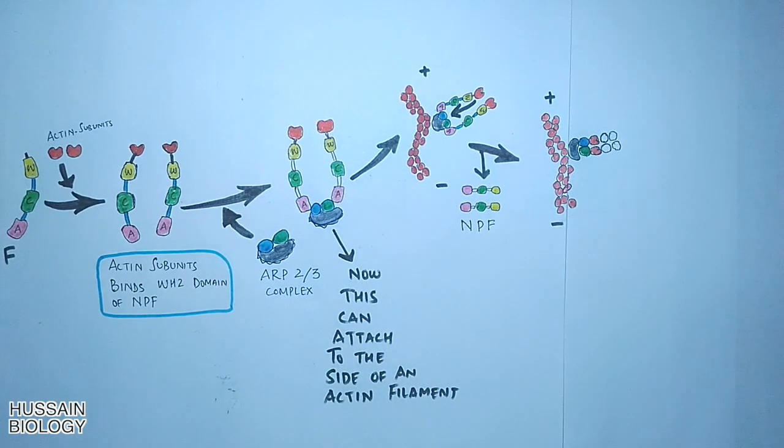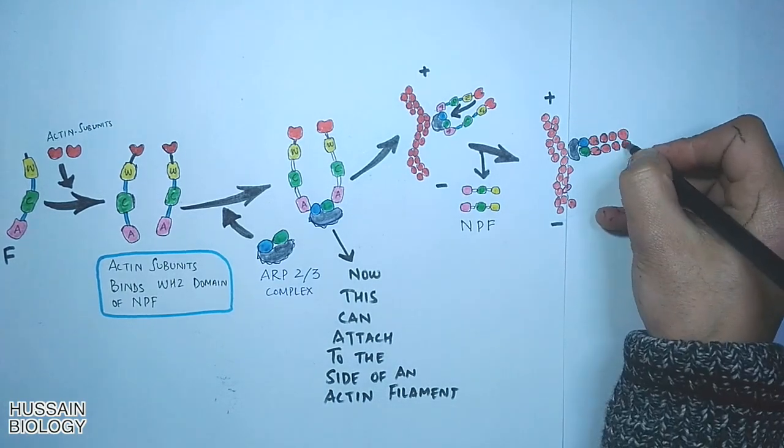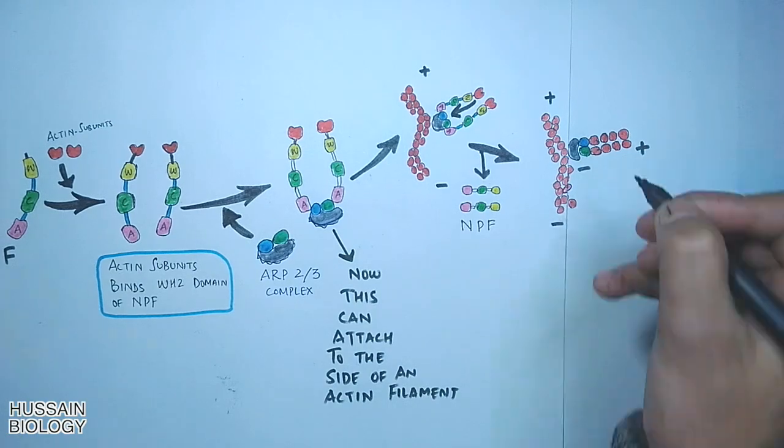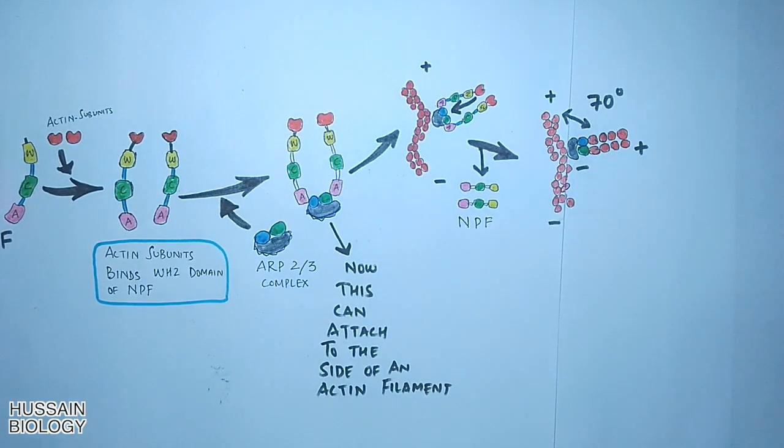And after many steps we get the actin polymerization, which is branched. And it must be noted that ARP2/3 branch makes a characteristic 70 degree angle between the old and new filaments.